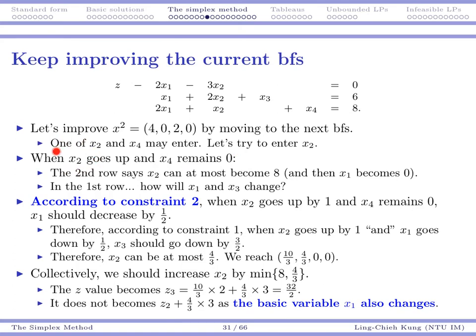When we want to enter x2, that may create some problems now. When x2 goes up, we know at the same time x4 should remain 0 because we only want to enter one variable. And then the second row here tells us that when x2 goes up and x4 remains 0, x2 can be at most 8 so that at that moment x1 becomes 0. That's from second row. It's okay.